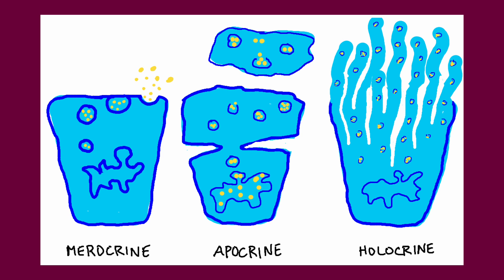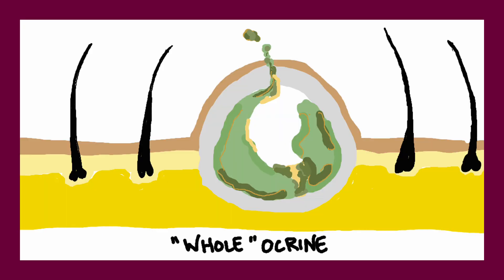Holocrine secretions represent programmed cell death. The entire cell gets loaded up with the product and then ruptures and disintegrates and becomes the secretion. A good example of holocrine secretion is the sebum of the scalp and sebaceous glands of the skin. If you've ever seen a sebaceous cyst with all the gross particulate matter inside, it's easy to guess that these secretions represent the disintegration of whole cells, or holocrine secretions.